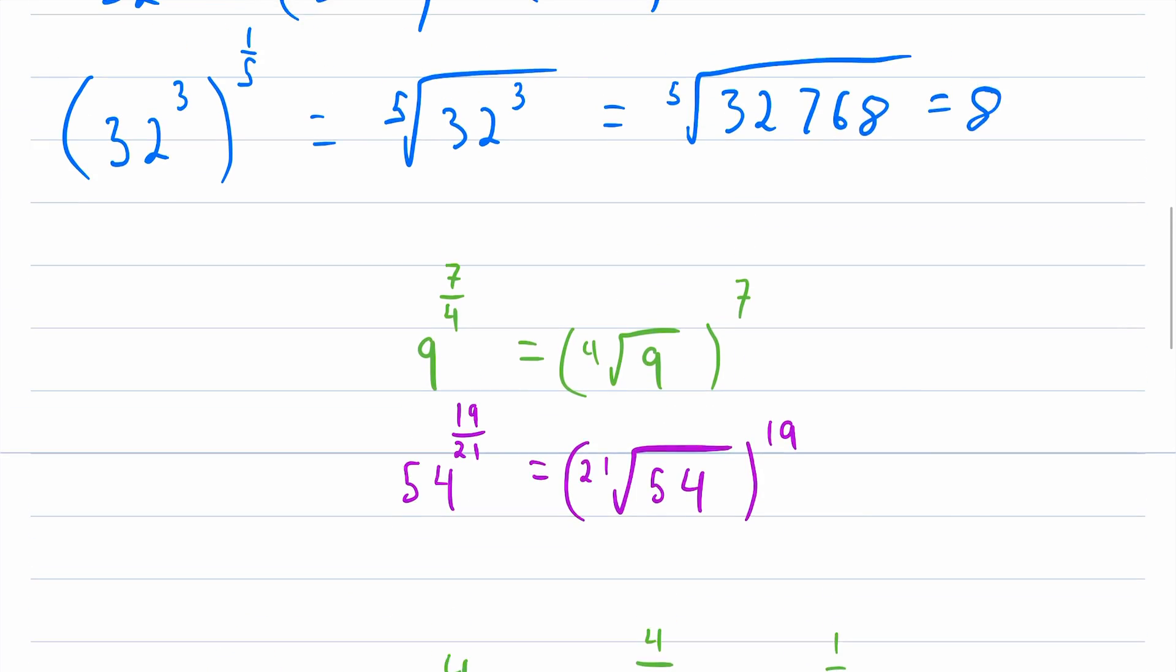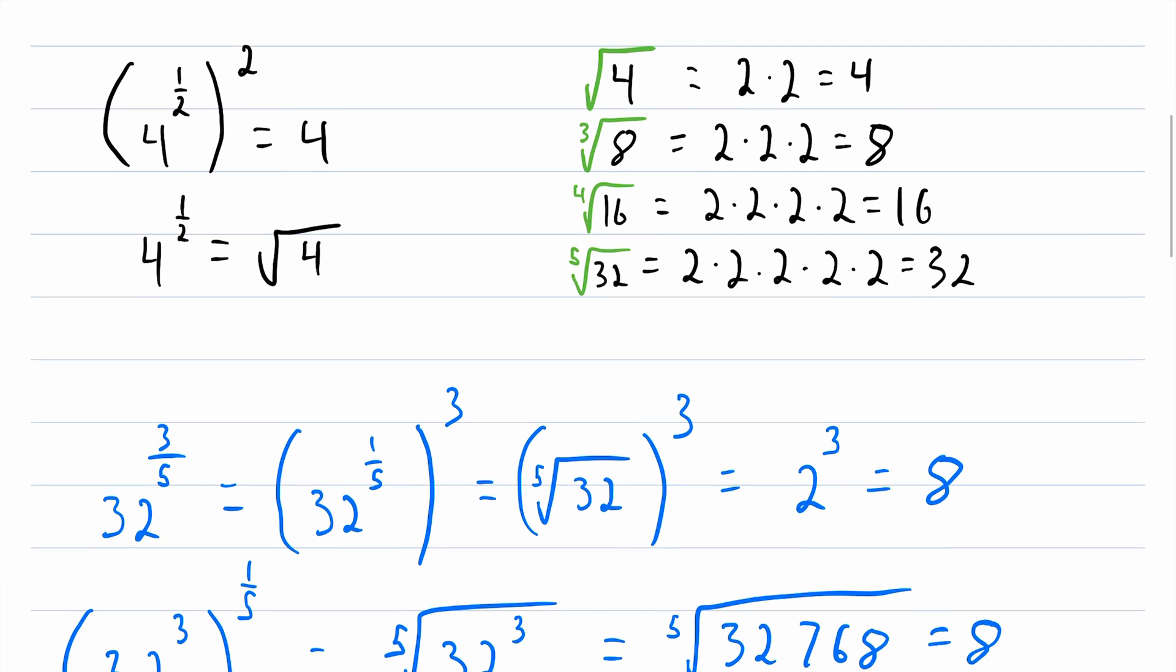One last thing, let's just touch on negative exponents. Negative fractional exponents work the same way negative exponents always have. Let's say we have 15 to the power of negative 3 over 7. A negative exponent just means we're taking the reciprocal. So this is equal to 1 over 15, and now we have a positive exponent, 3 over 7. If you've got a negative exponent, just send it on down to the denominator with a numerator of 1, and then your exponent is positive. So that is what fractional exponents are, and why we would ever want to use them to begin with.